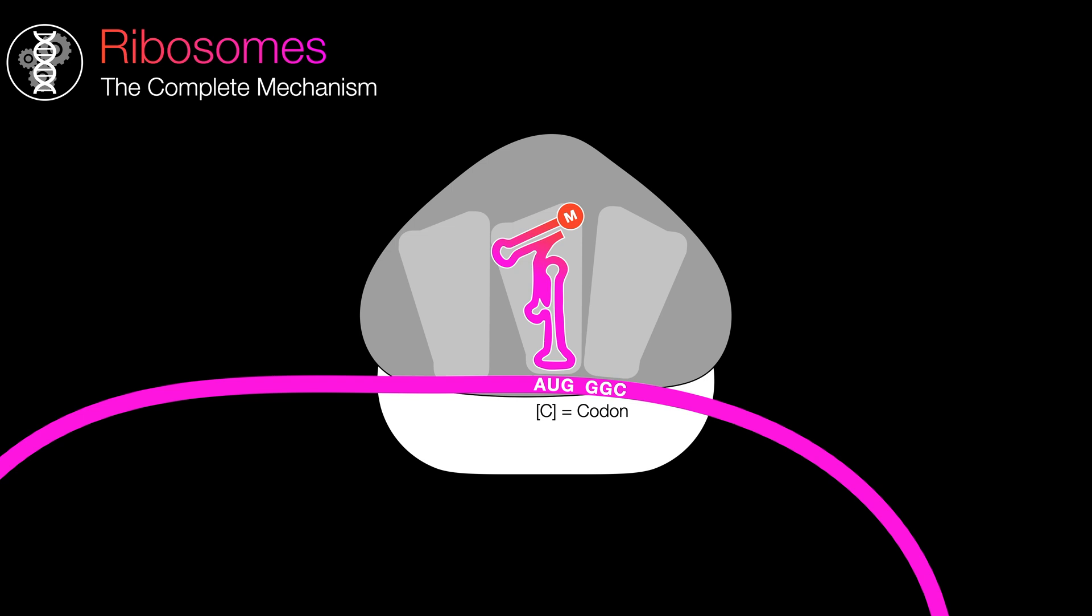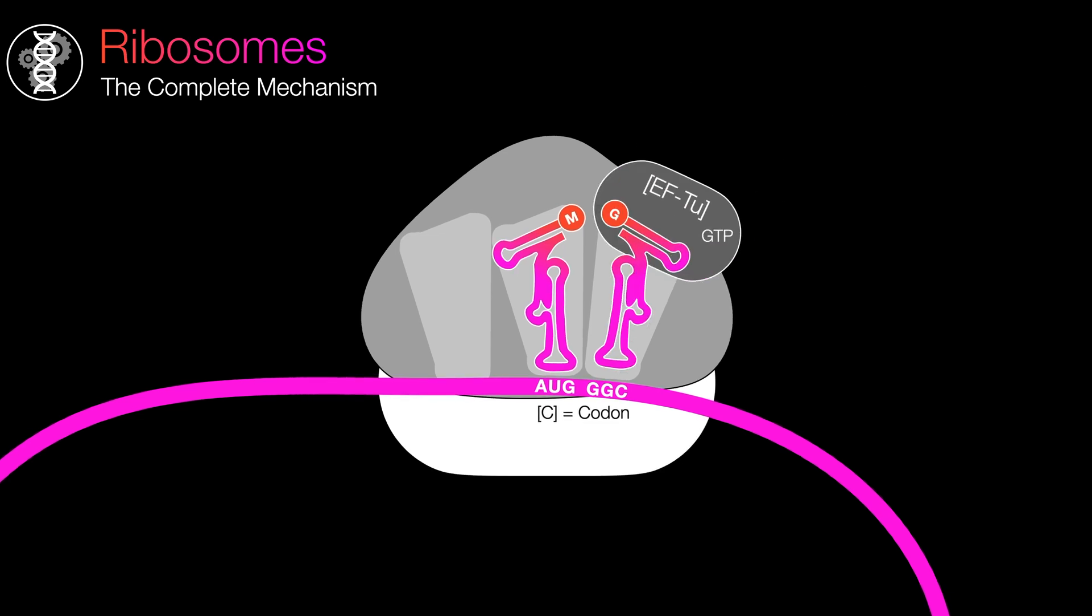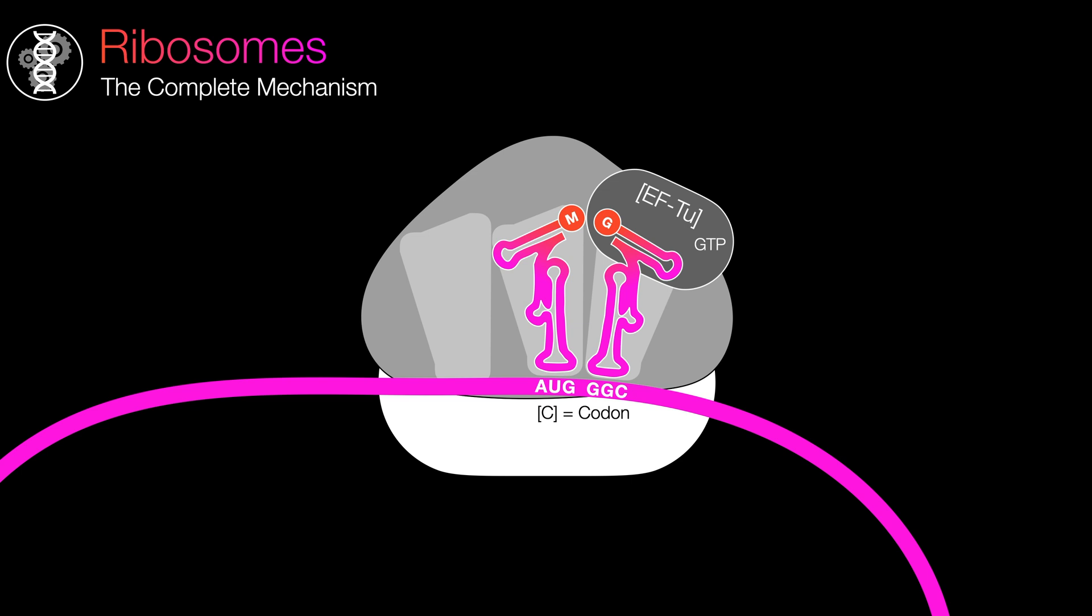In reality, tRNAs are actually bound to another protein called EFTU, which also has a molecule called GTP attached to it. GTP is similar to ATP, but it uses G instead of A. When the tRNA arrives at the ribosome, it can base pair with the mRNA just like before, but it cannot attach the amino acid to the growing chain just yet. This is because the EFTU needs to use up the GTP to GDP, which is an irreversible step that consumes energy.